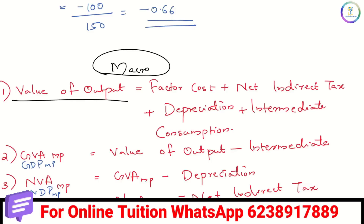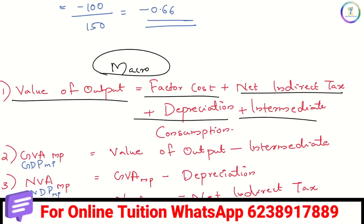Value of output equation. Value of output equals factor cost plus net indirect tax plus depreciation plus intermediate consumption.